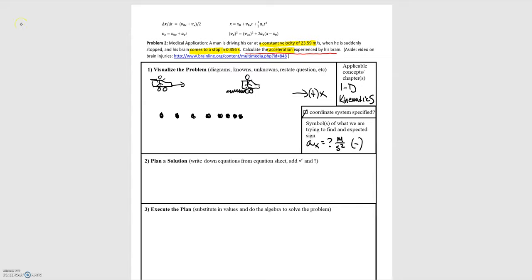Start labeling the information from the problem onto our motion diagram. So we're going to choose the initial position to be the point just before the stopping time frame. So that's going to be this point right here.